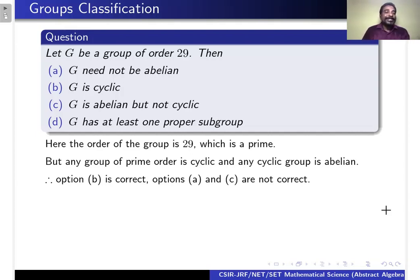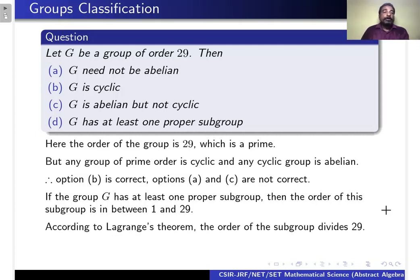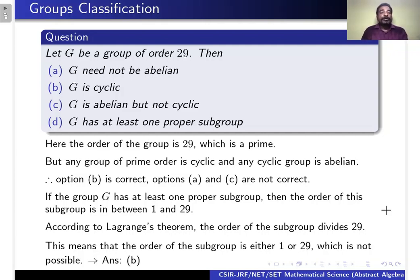What about option D? If G has at least one proper subgroup, then the order of the subgroup is between 1 and 29. According to Lagrange's theorem, the order of the subgroup divides 29. Therefore, the order of the subgroup is either 1 or 29, which is not possible. Therefore, option D is not correct.